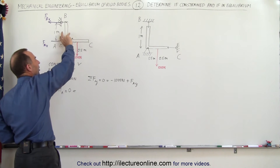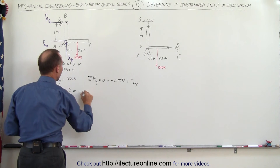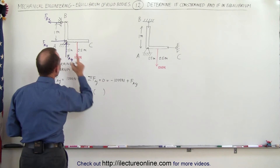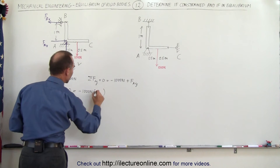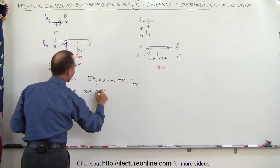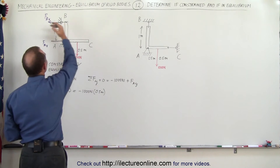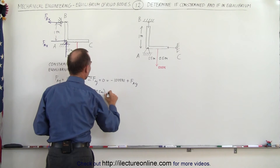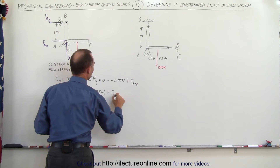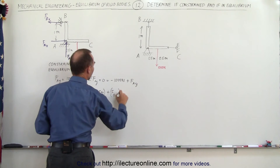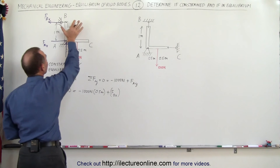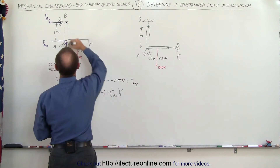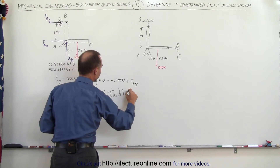This gives us: minus 1000 newtons times the moment arm of 0.5 meters — that's the clockwise term — plus F sub B in the x direction times a moment arm of one meter, which causes counterclockwise motion, equals zero.